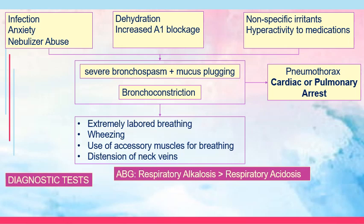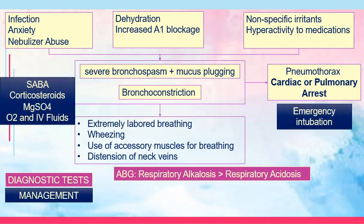For diagnostic tests, the ABG would initially reveal respiratory alkalosis because part of compensation is that the patient is breathing fast. Later on, it progresses to respiratory acidosis because there is already narrowing of the airway and carbon dioxide trapping — carbon dioxide is staying within the lungs. For management, short-acting bronchodilators or short-acting beta agonists are used. The beta agonist can be administered every 15 to 20 minutes — for example, salbutamol can be given three times every 15 to 20 minutes.